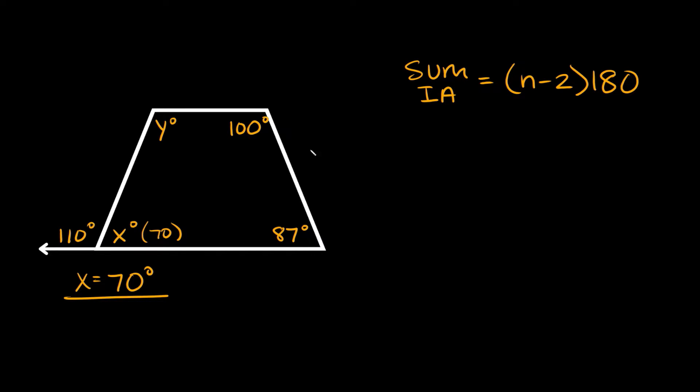So this trapezoid has four sides so n is going to be equal to four. So let's start with this part right here, the sum of the interior angles. Let's add up all the interior angles. So that's going to be y plus 100 plus this one that we found 70 plus 87.